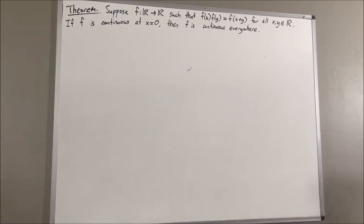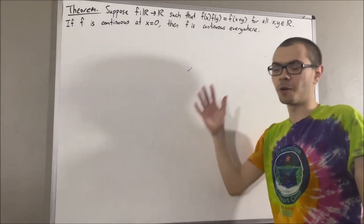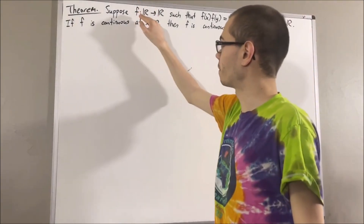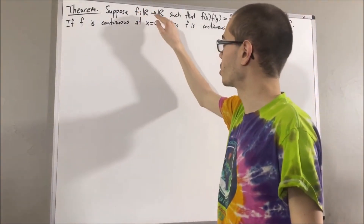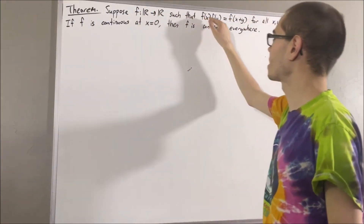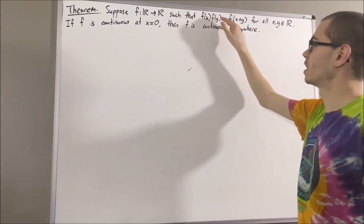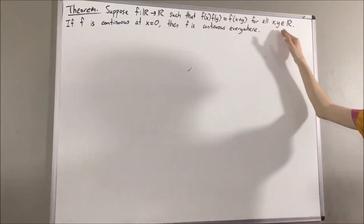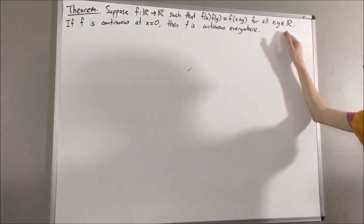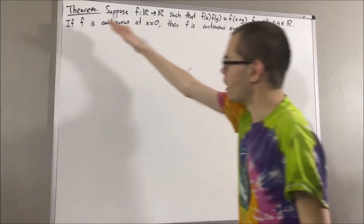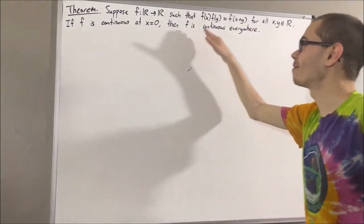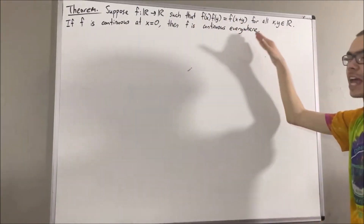In this video, we are going to prove the following theorem. Suppose f is a function from the real numbers to the real numbers such that f of x times f of y is equal to f of x plus y, for all real numbers x and y. If f is continuous at x equals 0, then f is continuous everywhere.